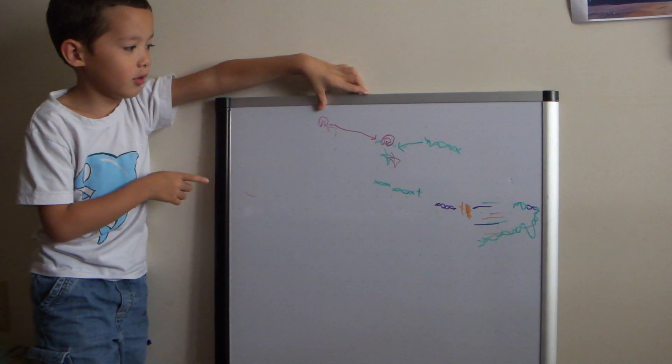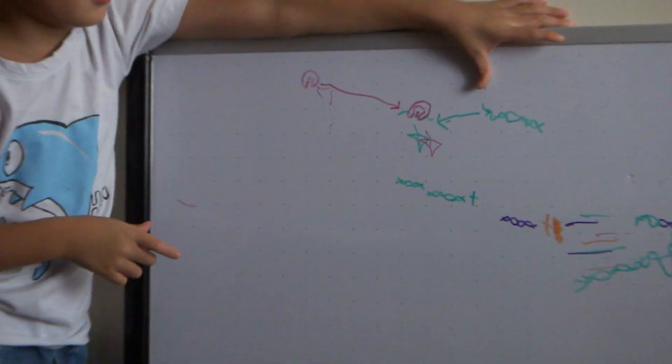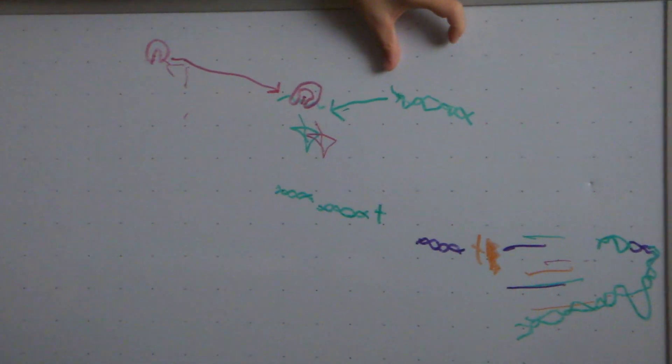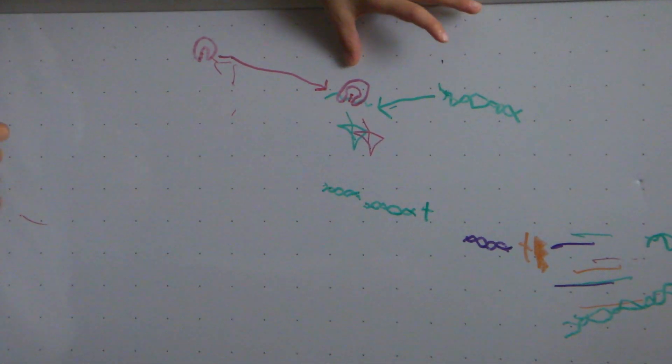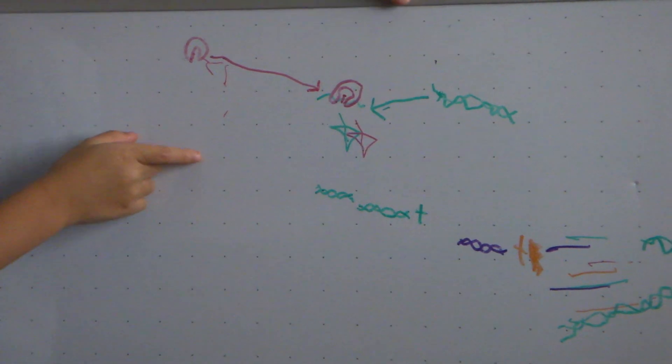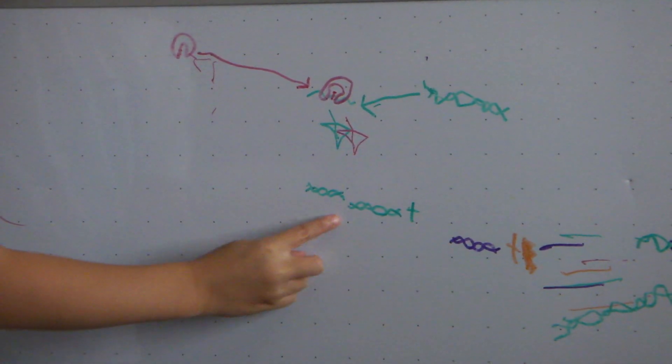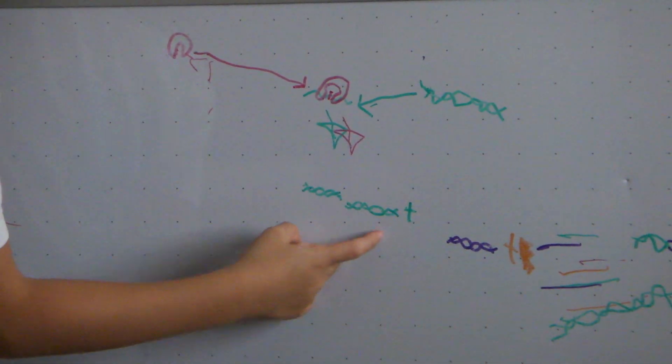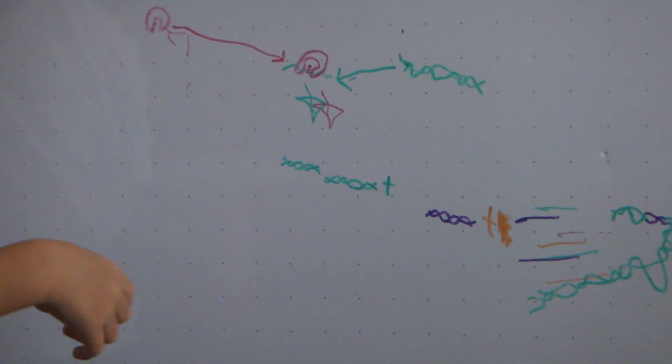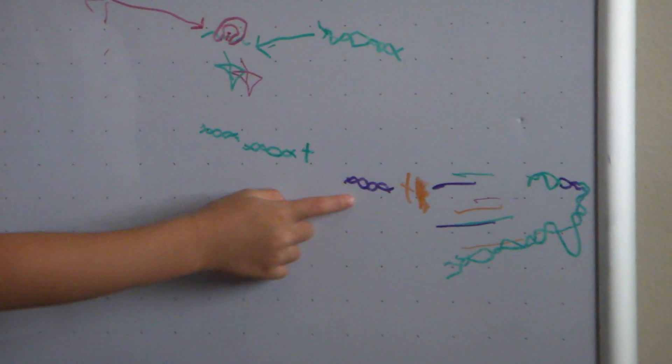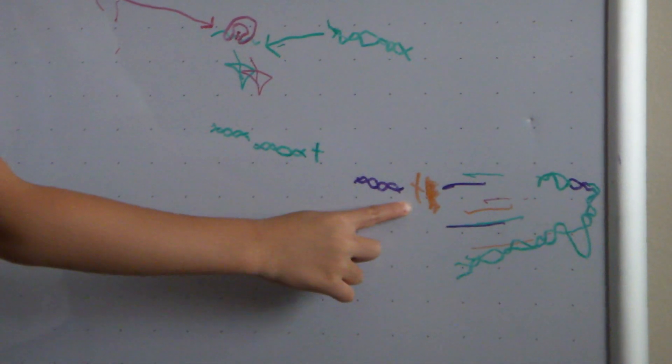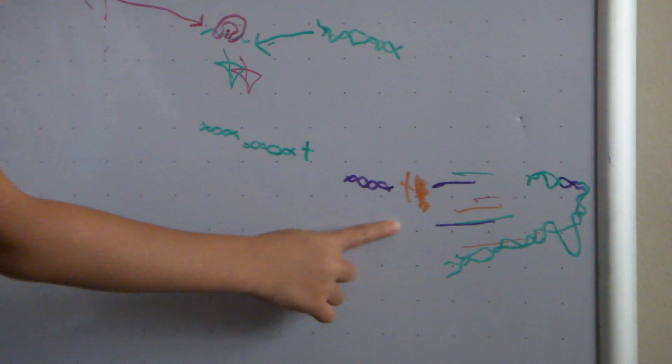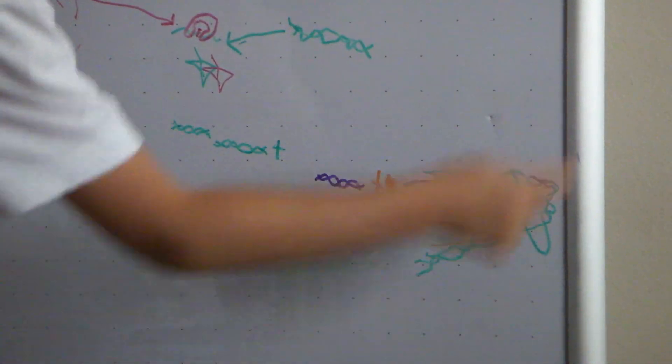The restriction enzyme and the DNA combined to form the restriction enzyme DNA complex. And then it equals two DNA fragments, and then DNA fragments plus borin and plus ligase equals DING.